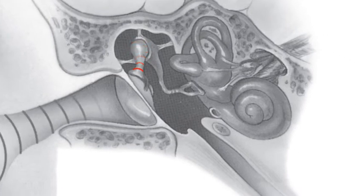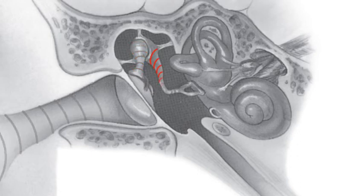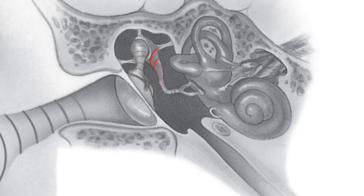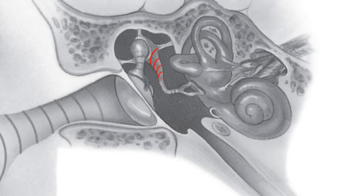Continuing its journey through the middle ear system, the incus, which is attached via ligaments to the malleus, begins to vibrate as it is stimulated by the mechanical sound energy.